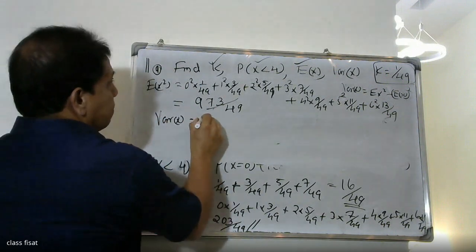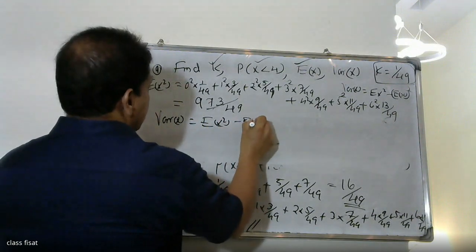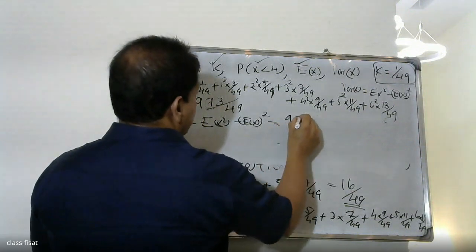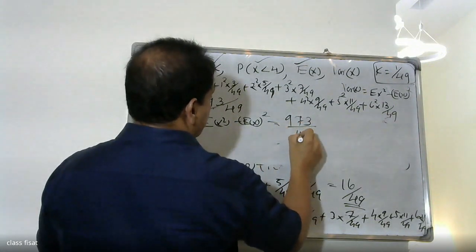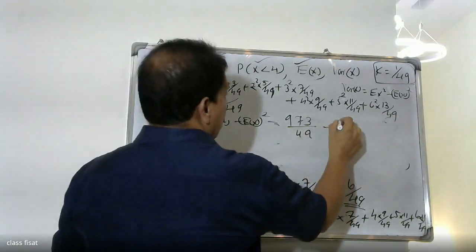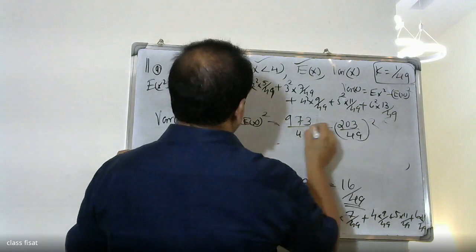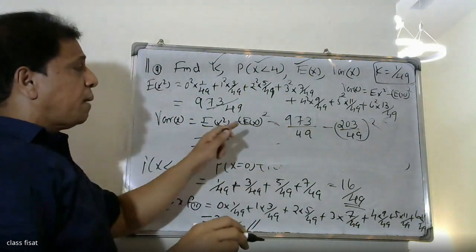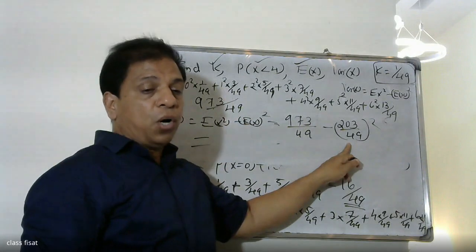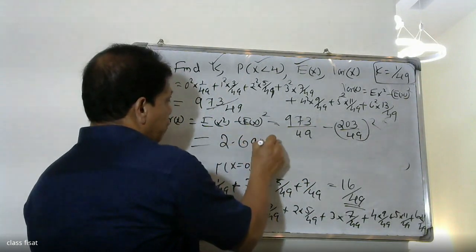Variance of X equals expectation of X squared minus expectation of X the whole square. The expectation of X is 73/49, and the variance of X equals 2.694.